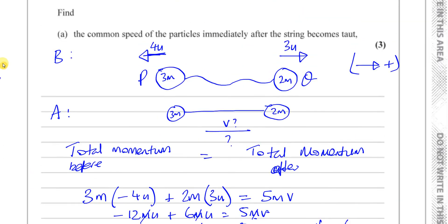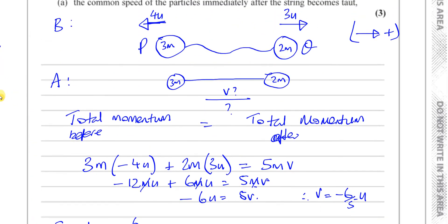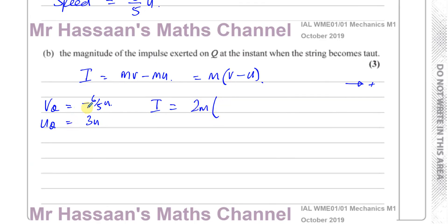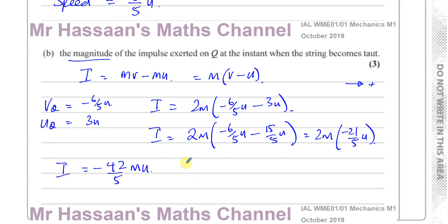The initial velocity of Q, looking back in the question, was 3u in the positive direction. So the change in momentum is going to be its mass — the mass of Q is 2m — times v, which is the final speed minus 6/5 u, minus 3u. So the impulse will be 2m times (minus 6/5 u minus 15/5 u), which gives minus 21/5 u. Multiplying out, you get the impulse being negative 42/5 mu. They want the magnitude, so the magnitude is equal to 42/5 mu.